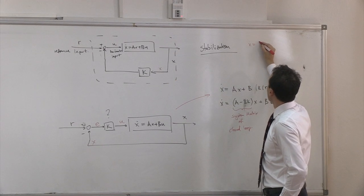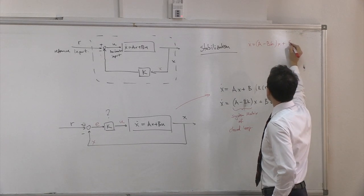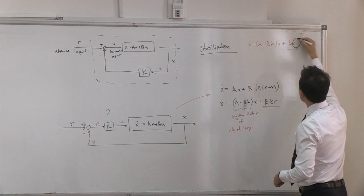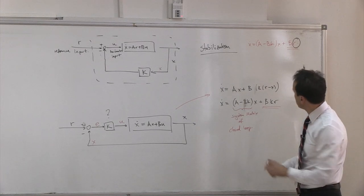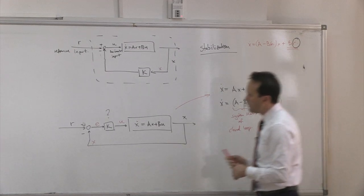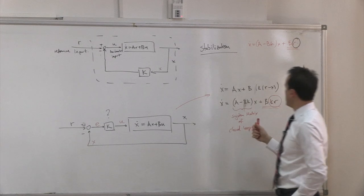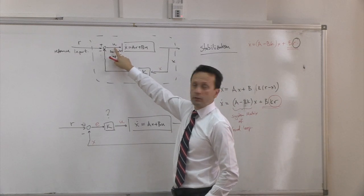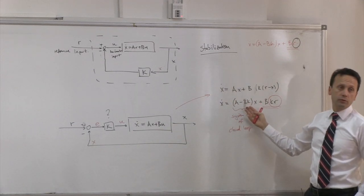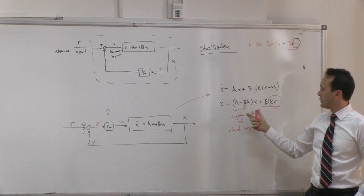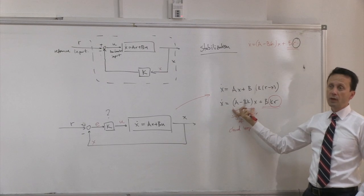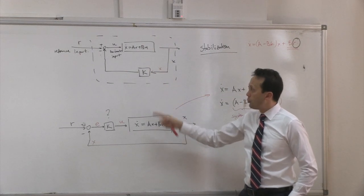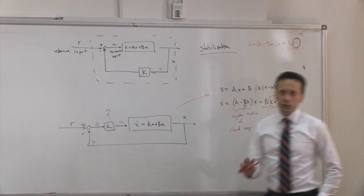For the other architecture, the closed loop looked like: (A minus BK)·X plus B·R. So the only difference is the input term: one has input R, and here the input to the closed-loop system is actually K times R. Although the input looks like R, from a system's point of view it is K times R. But the system matrix of the closed-loop is still the same — the eigenvalues of the closed-loop are identical, A minus BK.